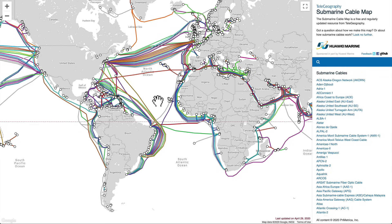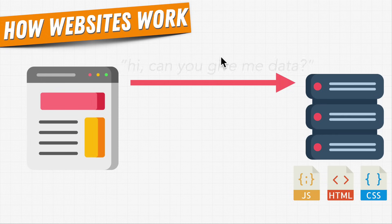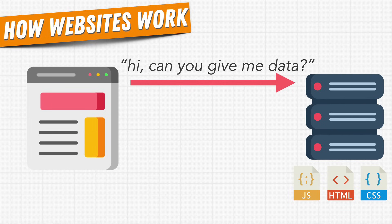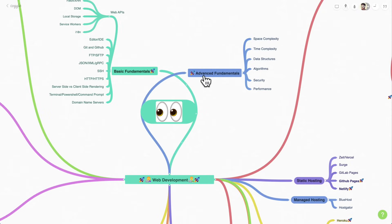The way we view web pages: we have a browser, and this browser sends a request to a computer somewhere in the world called a server, saying, 'Hey, can you give me some data?' The server responds, and the way it sends this data is through a protocol called HTTP or HTTPS. It usually sends three files — CSS, HTML, and JavaScript. The job of a web developer is to write these HTML, CSS, and JavaScript files so that we can display information to the user.